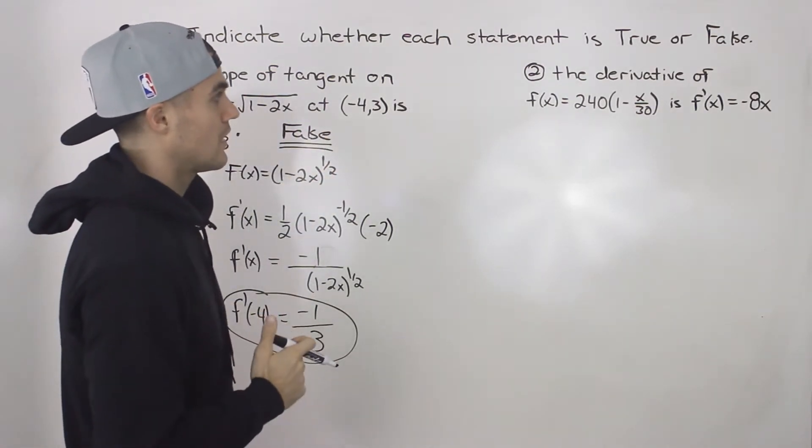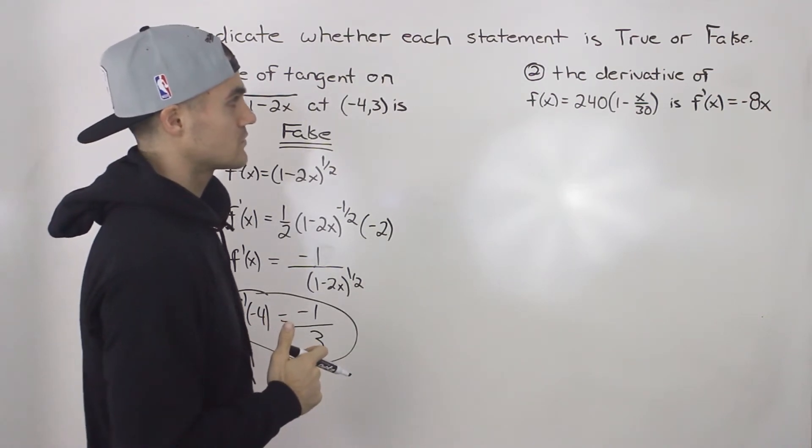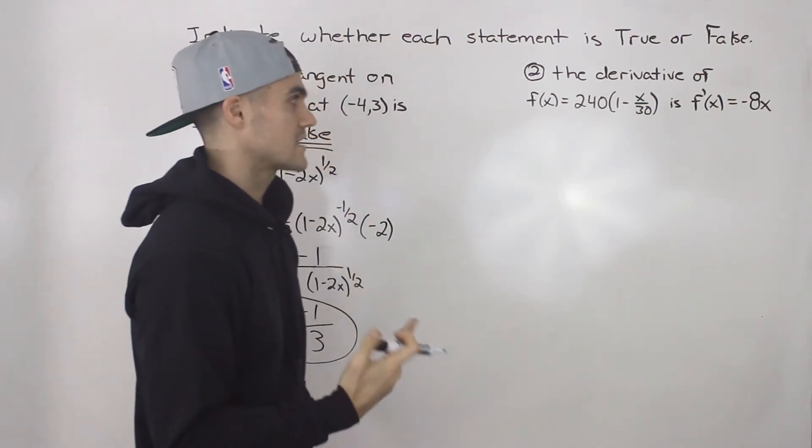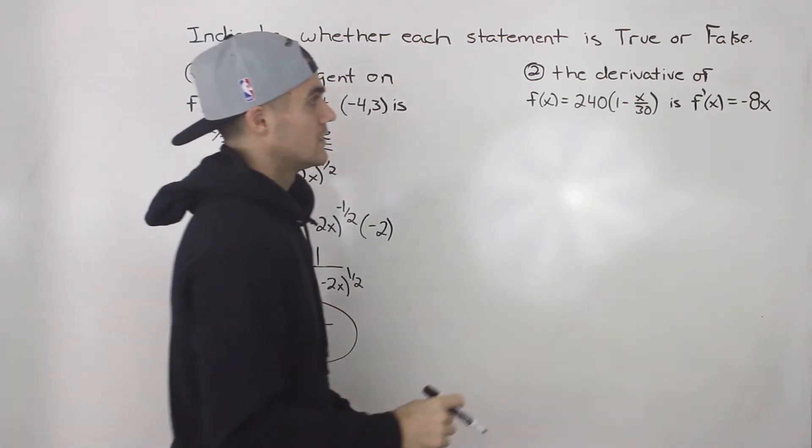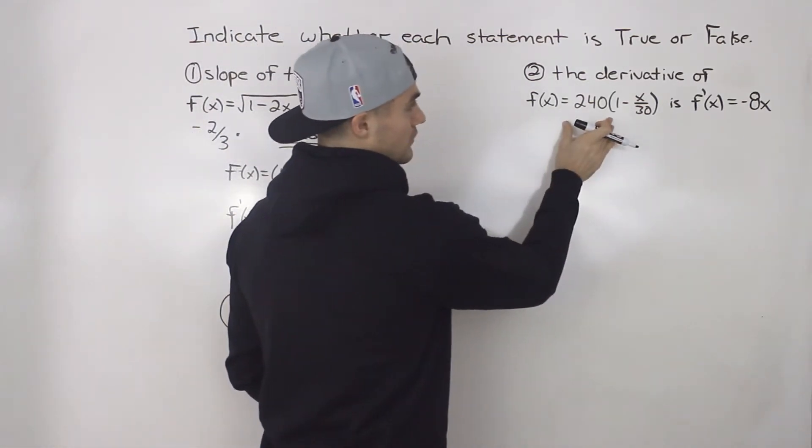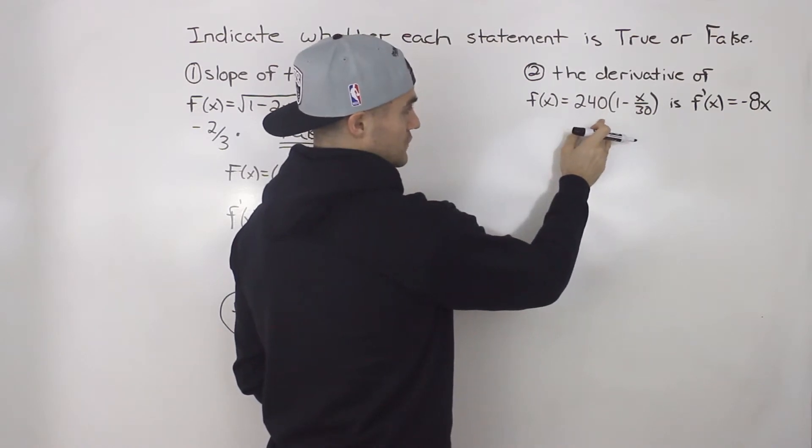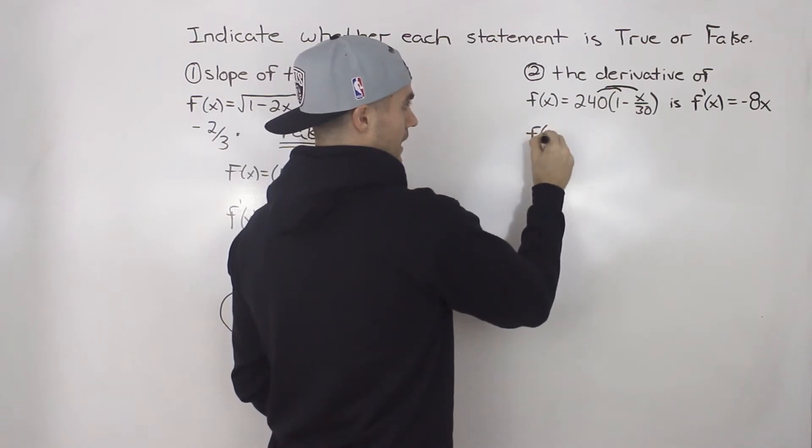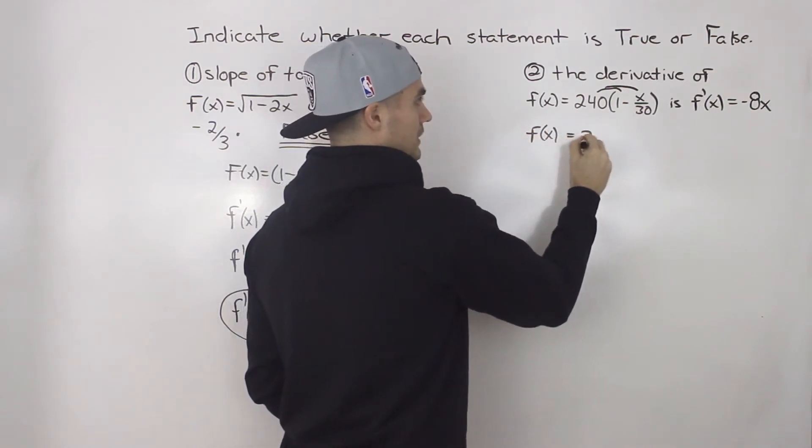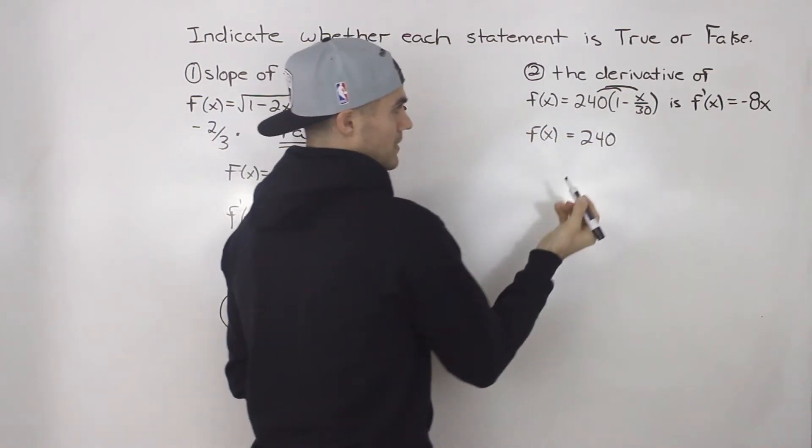Next statement, the derivative of the function f(x) equals 240 times (1 - x/30) is f'(x) equals -8x. To find the derivative of this, what I would suggest first doing is distributing this 240 in the bracket, as then your function might be a little bit easier to work with.